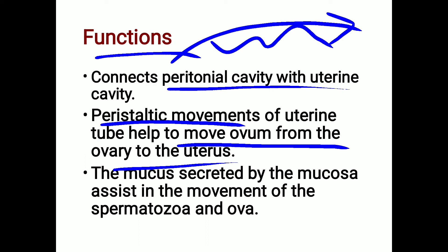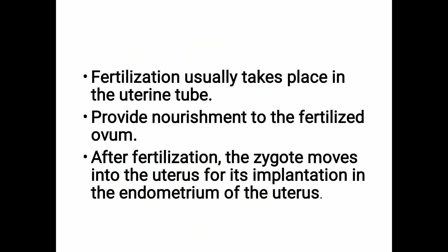The middle muscular layer helps in peristaltic movements, which move the ovum from the ovary into the uterus. The mucus secreted by the mucosa assists in the movement of spermatozoa and ova. The cilia of the ciliated columnar epithelium also help push them forward from the ovary into the uterine cavity.